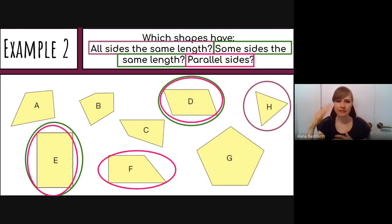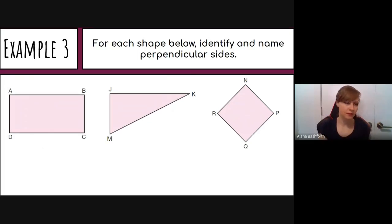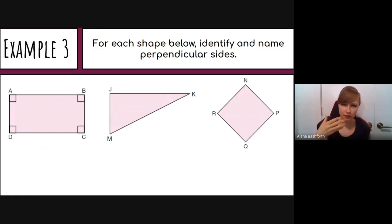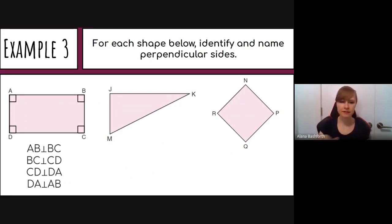For Example 3, we identify and name perpendicular sides — the 90-degree right angles. You can draw a small square in the corner to indicate perpendicularity, or use a physical right angle to check. The notation uses an upside-down T symbol between side names. For the first shape, AB is perpendicular to BC, BC is perpendicular to CD, CD is perpendicular to DA, and DA is perpendicular to AB.